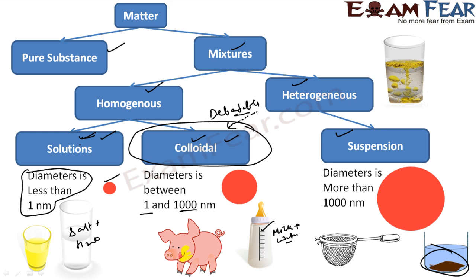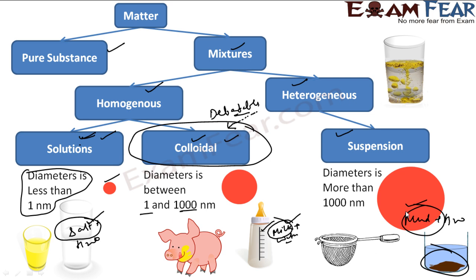Just try to remember these three terms — solution, colloidal, and suspension — and understand that this classification is based on particle size. When I say 'particle,' I mean: in salt and water, it's the salt particle; in milk and water, it's the milk particle; in mud and water, it's the mud particle. Depending on the size of these particles, we classify mixtures into solution, colloidal, and suspension.